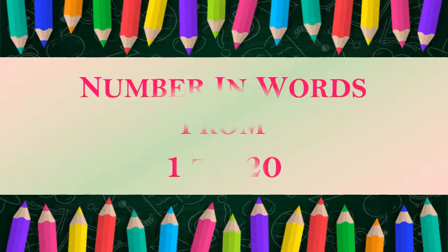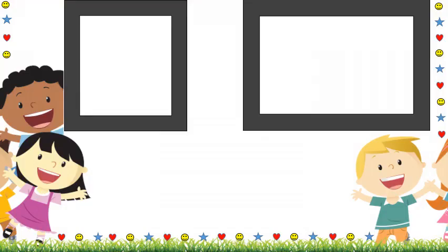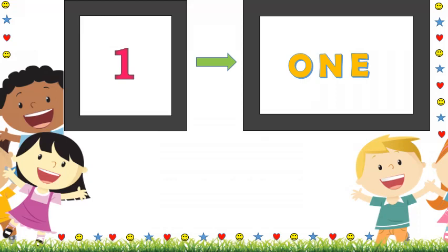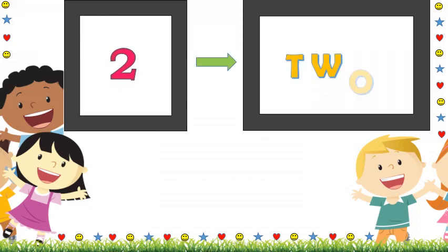Hello friends, today we will learn about numbers in words from 1 to 20. Let us start. Our first number is one. Let's see the word: O-N-E. One. Let's repeat it: O-N-E. One. Our next number is two. Let's see the word: T-W-O. Two. Let us repeat: T-W-O. Two.